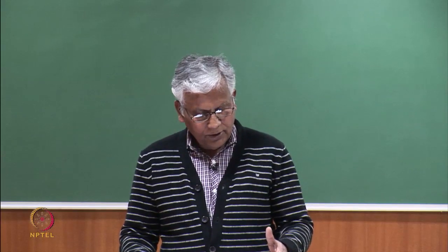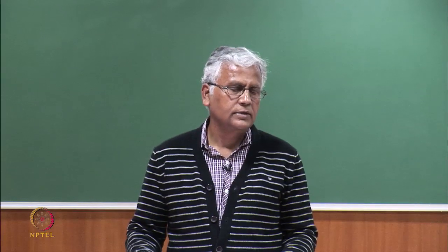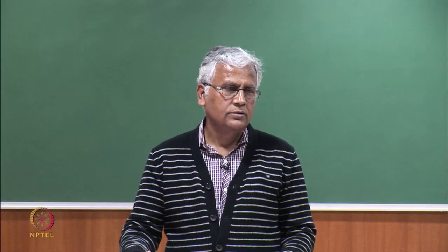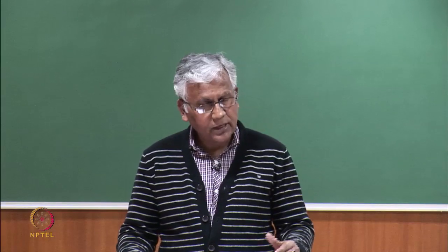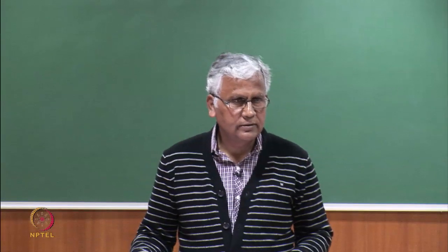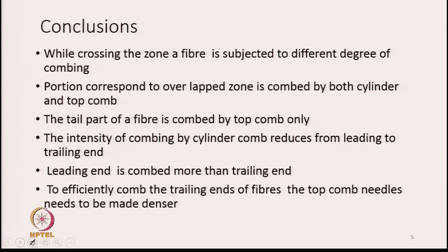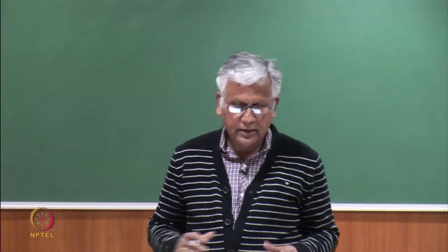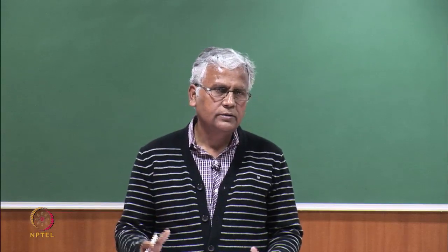The half lap has multiple rows of needles — 16 to 18 rows — so whenever cylinder combing is happening on the fibre, 16 to 18 rows of needles are working on it. But the tail part, when passing through the top comb, is only getting combed once by one row of comb needles. Therefore the top comb needles have to be much more densely spaced than the density of the needles on the half lap or cylinder comb. Because they have only one opportunity to comb the tailing part of the fibre, they are very closely spaced. To efficiently comb the tailing ends of fibre, the top comb needles need to be made denser than those on the half lap.